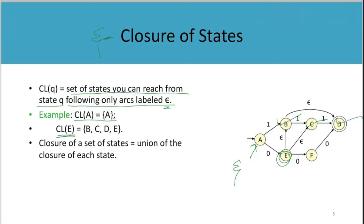So without giving anything from E, you can stay on E also. So E—you can go to B, you can go to C, and from B you can go to D without giving anything. So this is the epsilon closure of state E. The closure of a set of states equals the union of the closure of each state. That you understand, right?